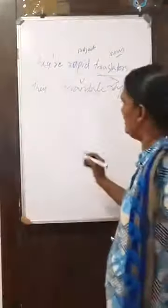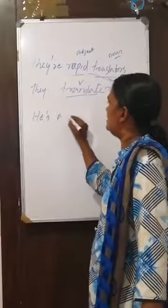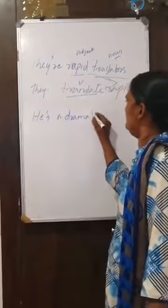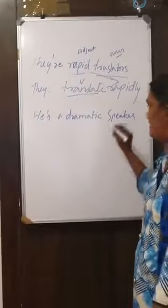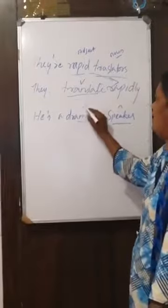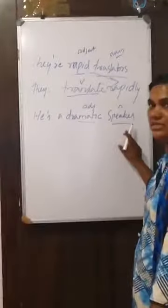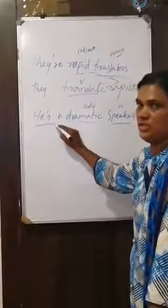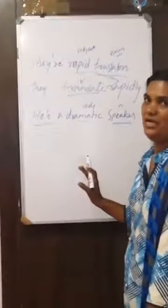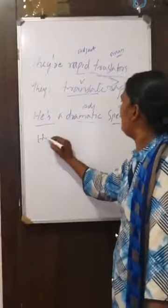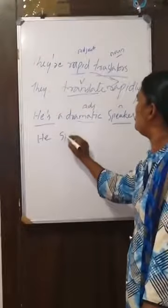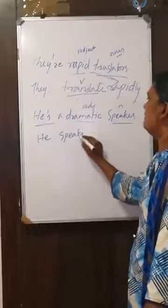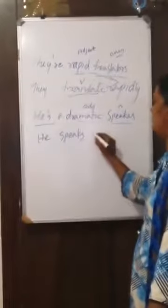And the word is: he is a dramatic speaker. Here speaker is a noun, and dramatic is an adjective that qualifies the word speaker. He is a dramatic speaker — how can we change this sentence, how can we do word formation? That is, speaker, the noun, changes to speaks, the verb. And the adjective goes to the adverb: dramatically. He speaks dramatically.